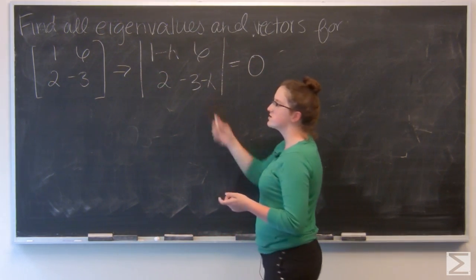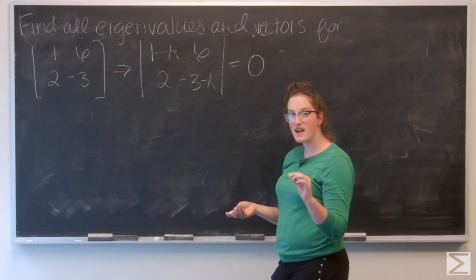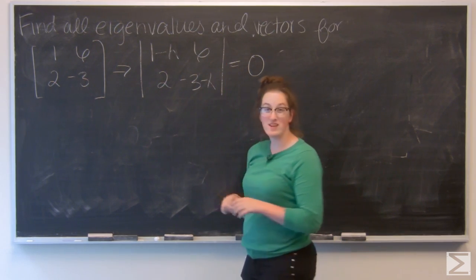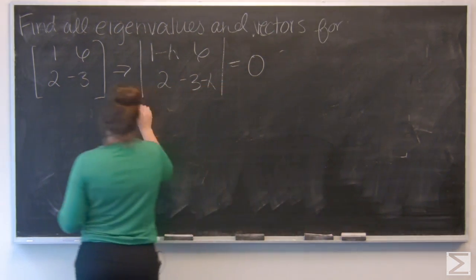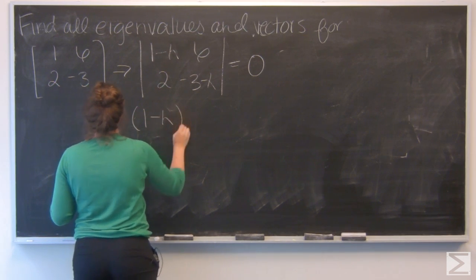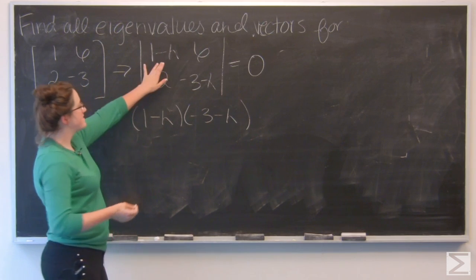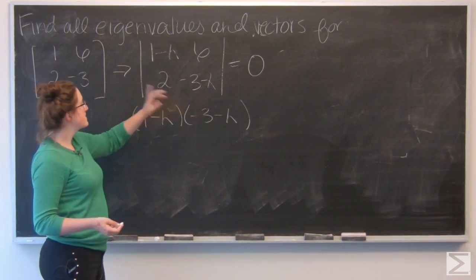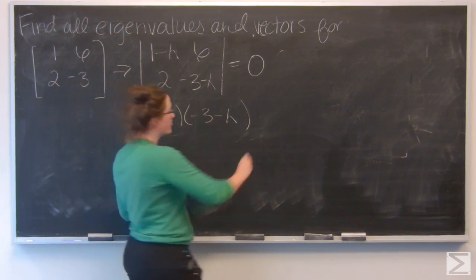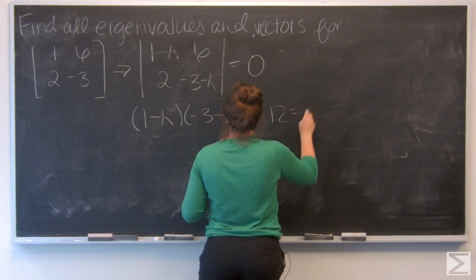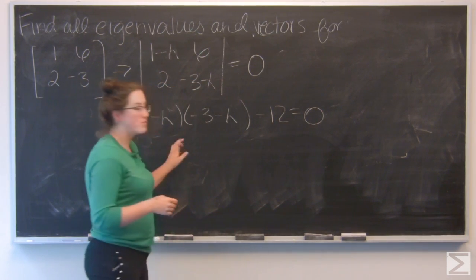And to find the determinant of this, I just want to multiply along the main diagonal and then subtract the product of the other diagonal. So, 1 minus lambda times negative 3 minus lambda minus 12. And I'm going to go ahead and multiply out.